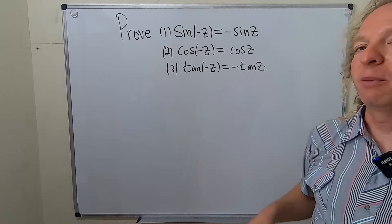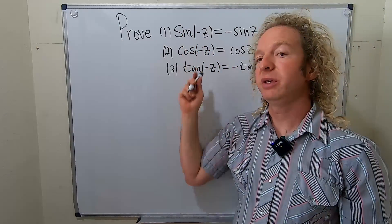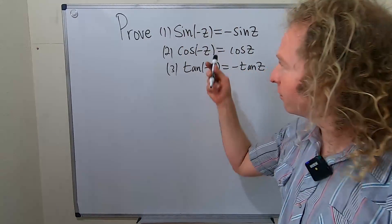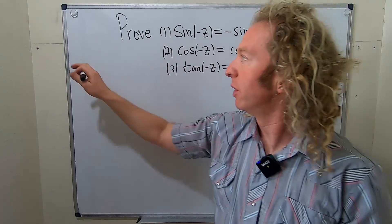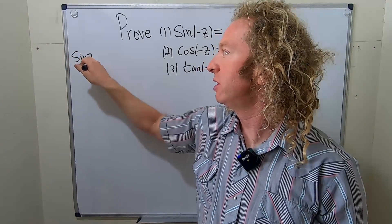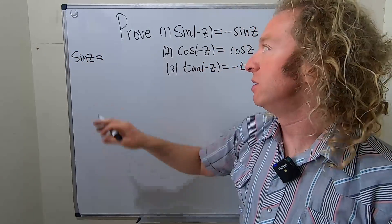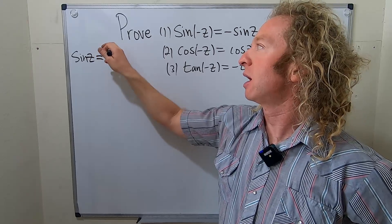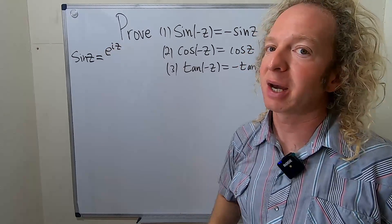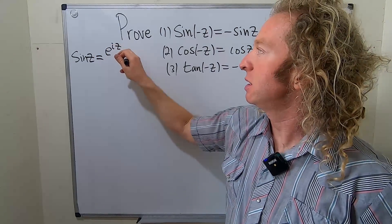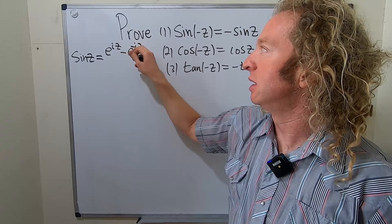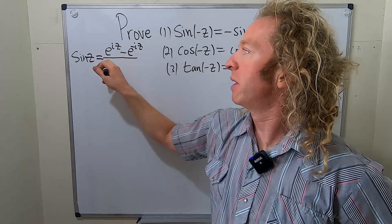Before we do though we have to know what these definitions actually are. They might not be what you think. The sine of z, remember z here is a complex number, is e to the iz minus e to the negative iz all divided by 2i.